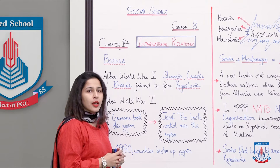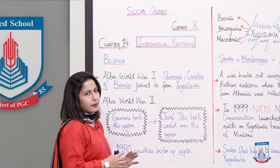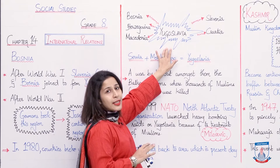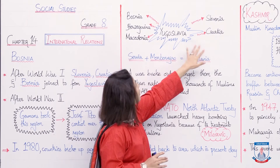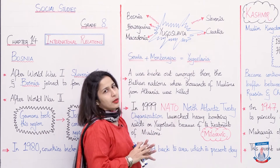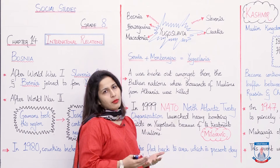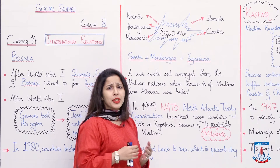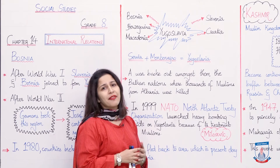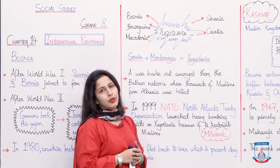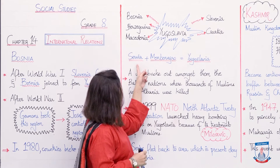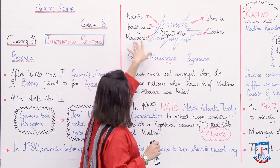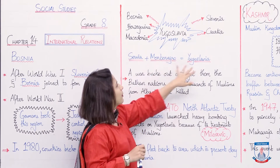In 1980, these countries broke up again. You can see here — they broke into Slovenia, Croatia, Macedonia, Herzegovina and Bosnia. Serbia and Montenegro still remained and combined to form Yugoslavia. So now there were two sides: these five small countries on one side, and Yugoslavia on the other.